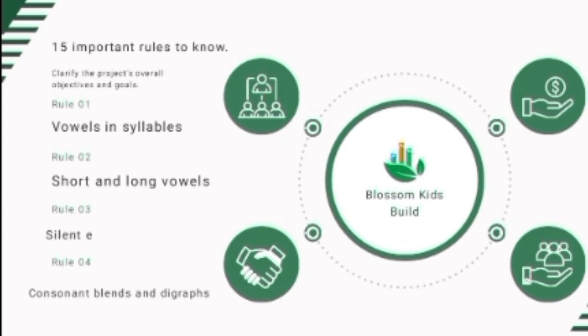An open syllable always ends with a vowel, and the result is a long vowel sound. For example, 'go' — the O is a long vowel. 'He' — the E is saying its name, a long vowel sound. Engage your child in activities like playing word games and reading books, clapping out syllables and gradually progressing to more complex words.